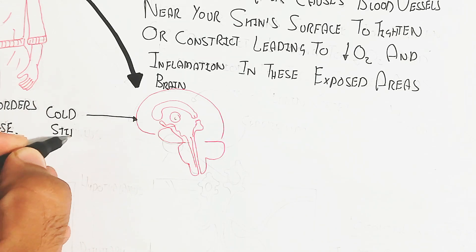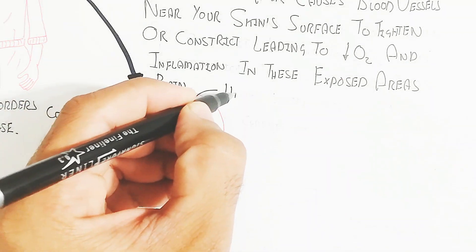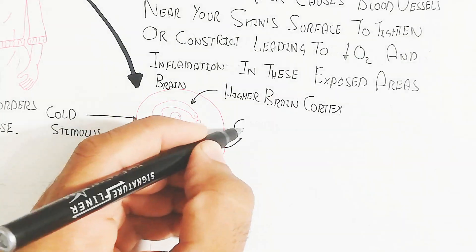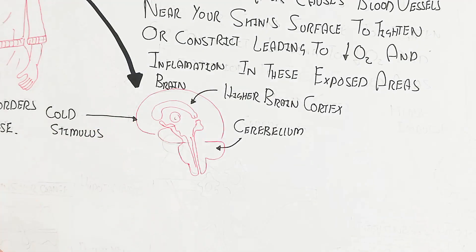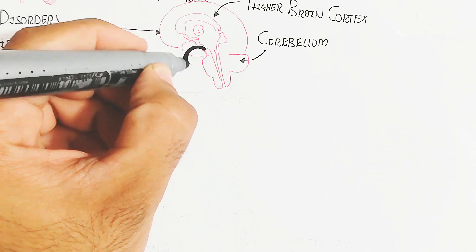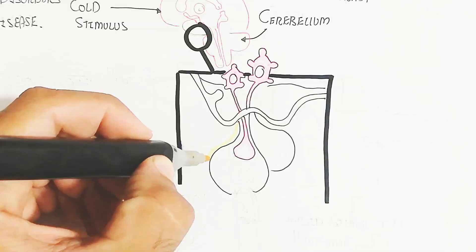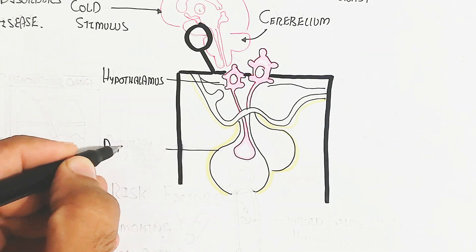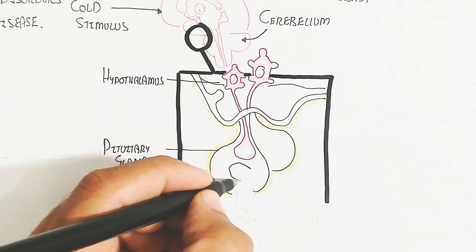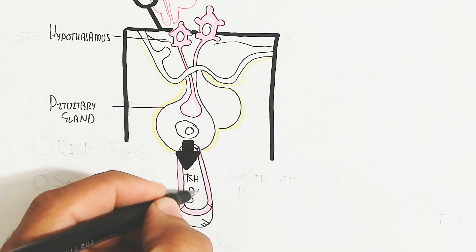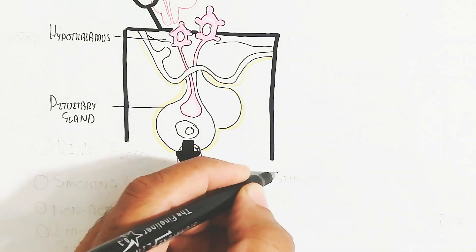So this is the brain. Remember the cold stimulation. If we discuss normal physiology, this is the brain and higher brain cortex and this is the cerebellum, but we will understand about the hypothalamus is here and the pituitary gland is involving for heat production and conserving metabolism.